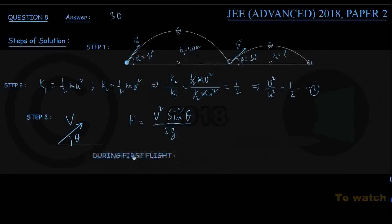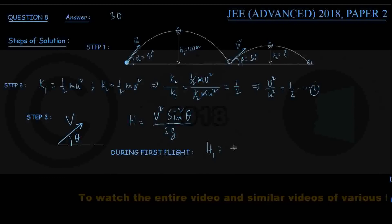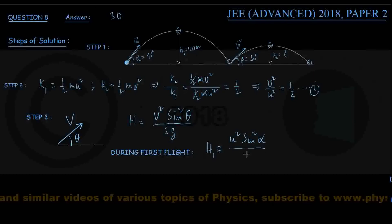During the first flight, maximum height reached is h1. So this h1 is equal to u squared sin squared alpha divided by twice g.